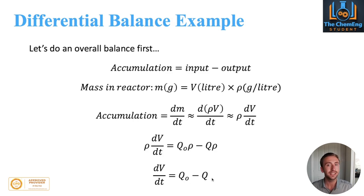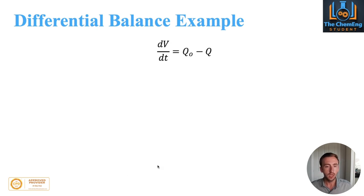What we're left with is dV/dt equals Q₀ minus Q. The difference between what comes in and comes out. That makes sense because if more comes in than leaves, that will tell us how much accumulates within the system.